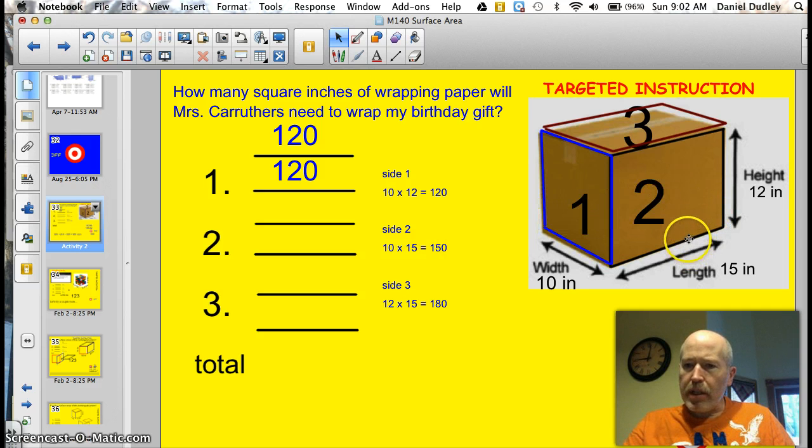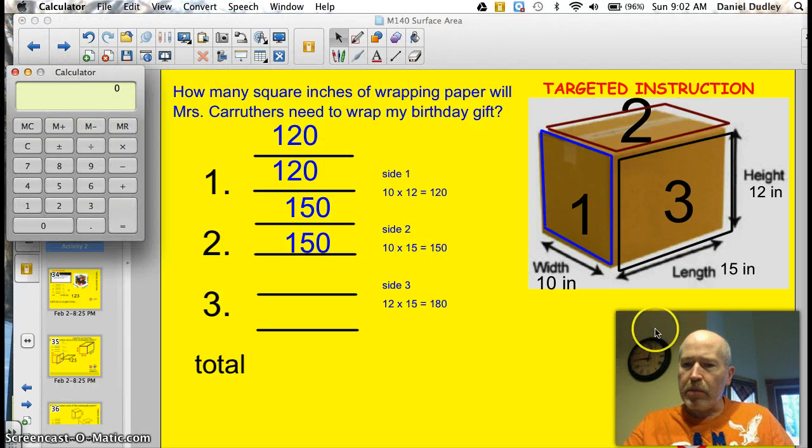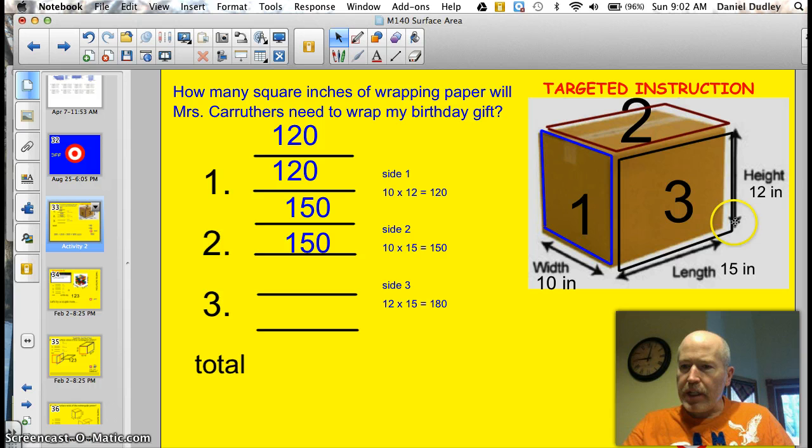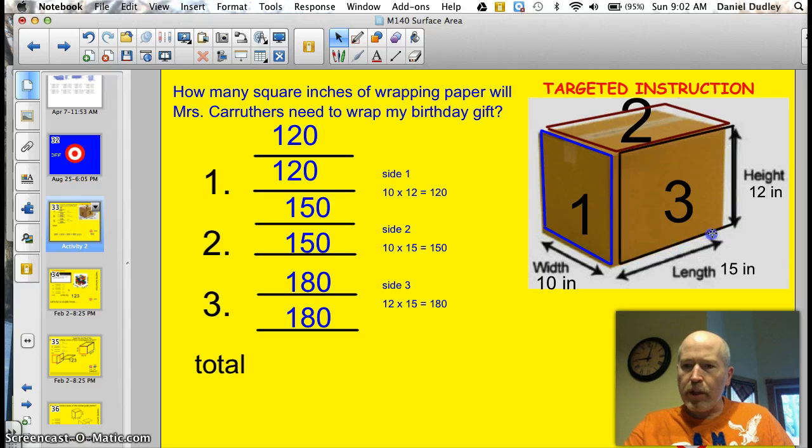Side two is going to be 10 times 15. So down here it's 10 wide and it's 15 long. So 10 by 15 is 150. 10 times 15 is 150. And you certainly can use a calculator. So that's side two. And then side three is going to be 15 times 12, which is 180. And once again for both sides two and three I put that number in twice because there's a front side and a back side as well.